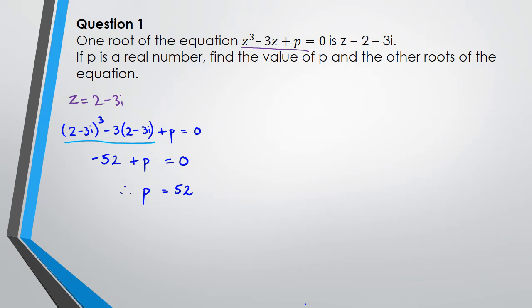Now I've found the value of p. For the other roots: remember the conjugate root theorem — if one of the roots is a complex number, then the conjugate of it is going to be the other root. So root 1 is 2 - 3i, which means root 2 is going to be 2 + 3i.